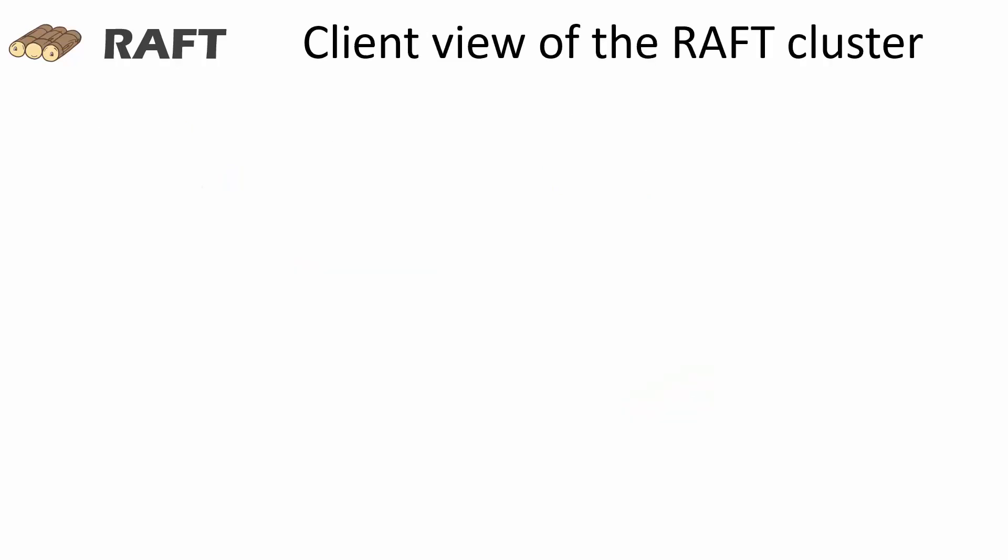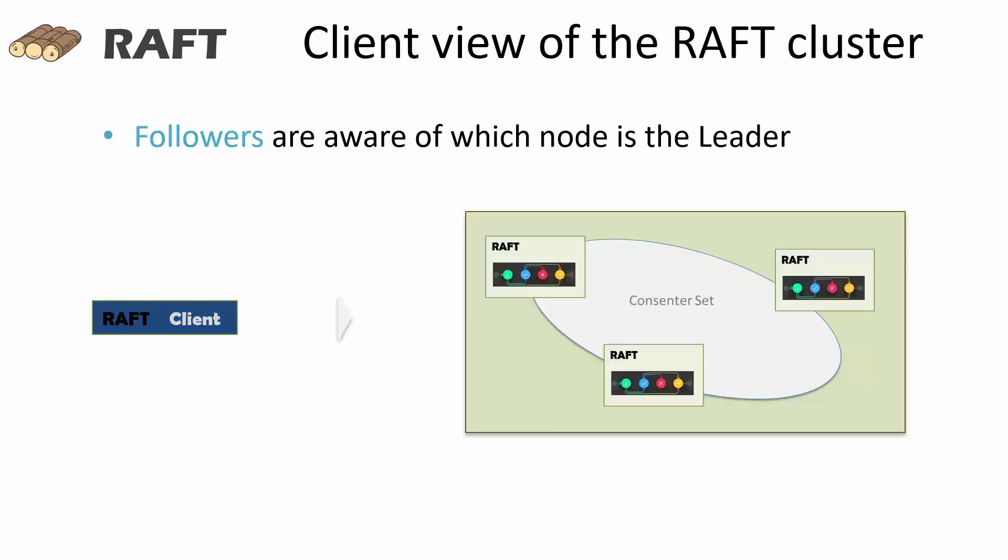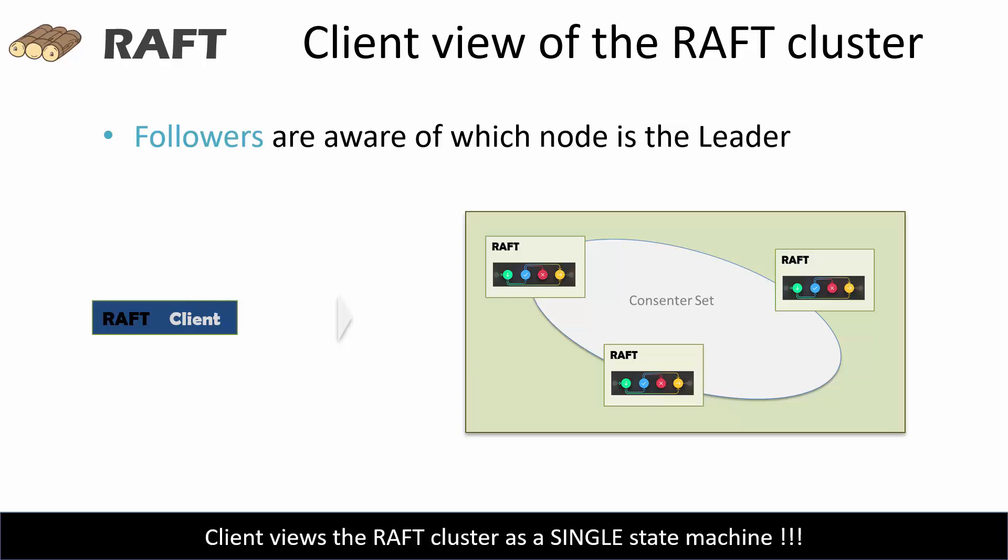The followers in the raft cluster are aware of the node acting as the leader. Raft clients can submit the transaction to any node in the cluster and that node routes the transaction to the leader node. As a result, the raft client views the raft cluster as a single state machine. It does not have to know which raft node is acting as a leader.